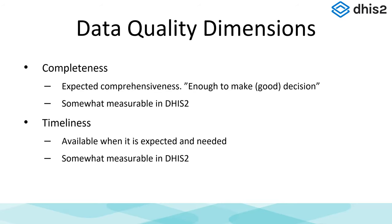The next dimension is timeliness: is all the data there when we need it to be there, when we expect it? If we're receiving data from many months ago, maybe that data isn't even relevant anymore — things may have changed. For example, you might be getting malaria data before the rainy season when you're already in the middle of the rainy season. So we need data coming in when it's supposed to, and we need to build our processes around the most relevant and up-to-date data. Again, this is something we can easily measure in DHIS2.